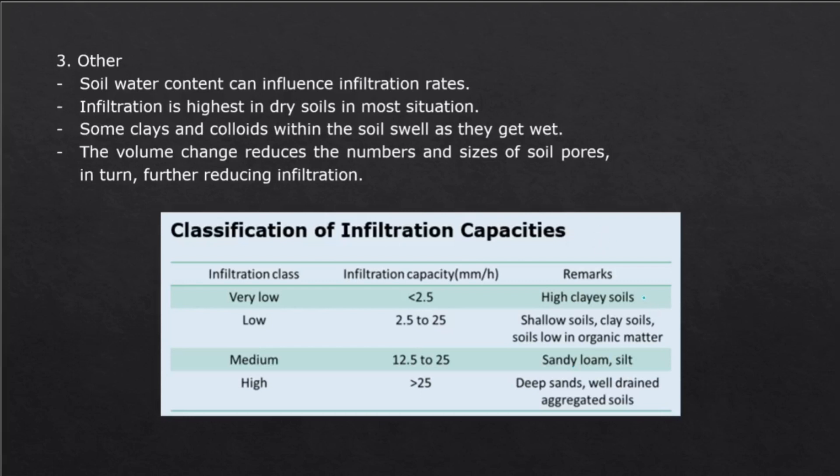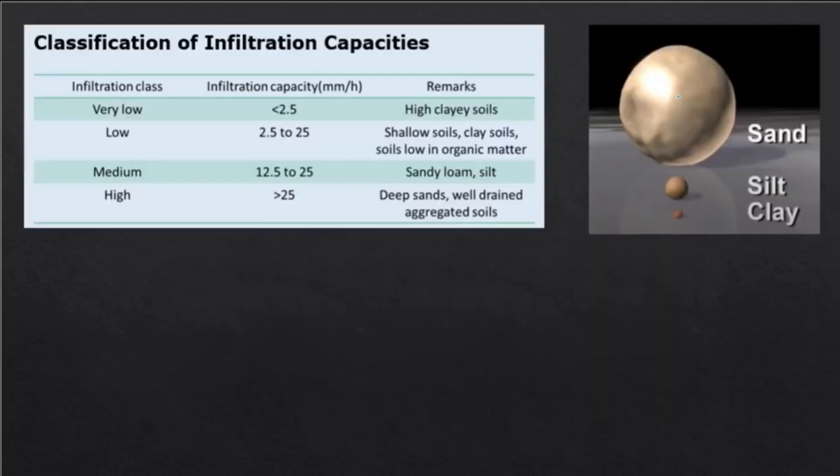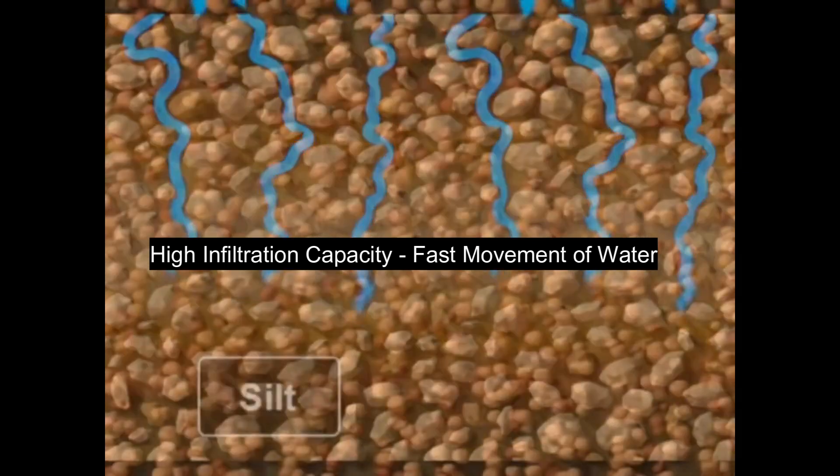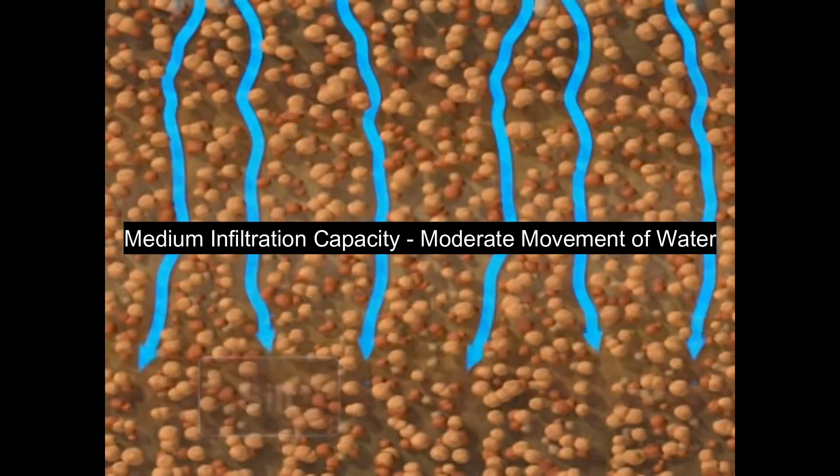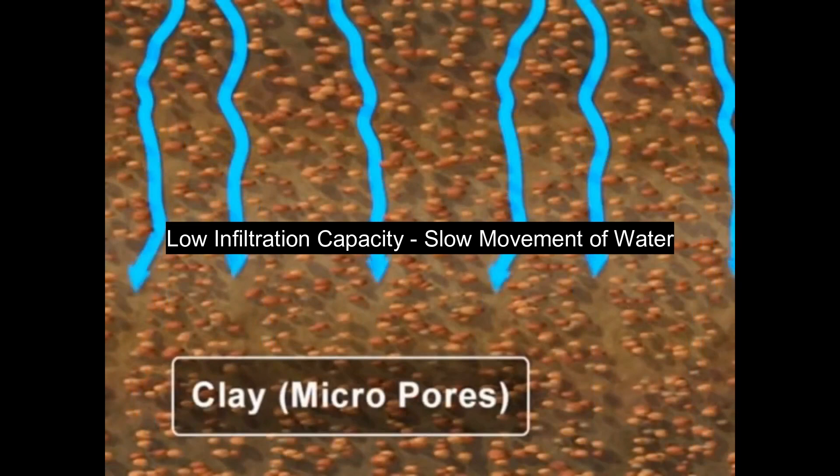Now for the infiltration capacities: for high clay soils, it's usually very low. While for shallow soils or clay soils, it's only low, while medium for sandy loam or silt. And then for deep sands, the infiltration capacity is classified as high. This happens because sand particles are very large, while silt is considered medium, and then clay has the smallest particles. So it's much easier for water to infiltrate sand because it has large particles. And so this is the movement for sand, and then this is the movement for silts, while this is the movement for clays.